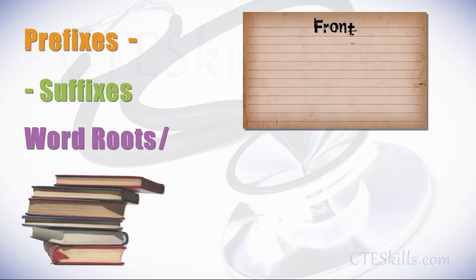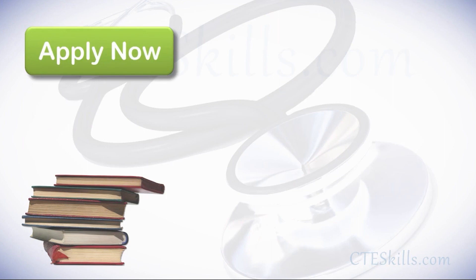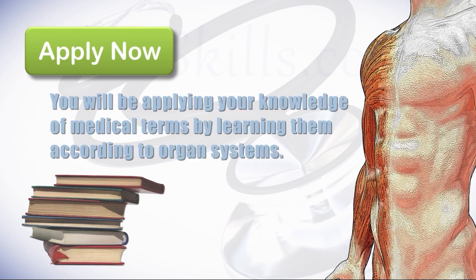A very proven method of learning the meaning of prefixes, suffixes, and word roots is by using flashcards — very simple to do. You can place a prefix, suffix, or word root on the front of a card, and the meaning on the back. This easy study method is a great tool in learning medical terminology. But the best way to learn anything is to apply it. Throughout this series of videos, as you learn about the anatomy and physiology of the human body, you will be applying your knowledge of medical terms by learning them according to organ systems.